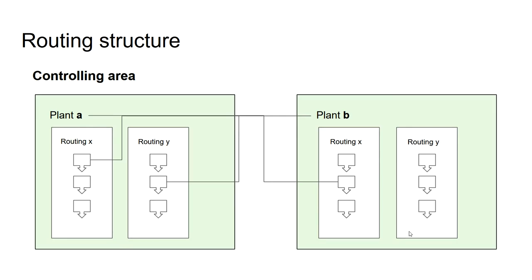To begin with, I want to provide some information on routing structures. When you create routings you have to enter a certain plant number, so you create routings on a plant-specific basis. Within a routing you have a sequence of operations, and you have the option of referencing operations specified in routings within another plant. The only condition for this is that the plants and the respective routings are all within the same controlling area.